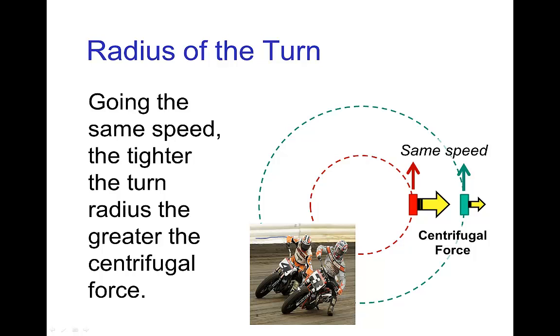So in this case, the two motorcyclists, if they're going the same speed in miles per hour, then the one on the inner turn has a greater centrifugal force than the one on the outer turn. So the tighter the turn for a given speed, the larger the centrifugal force.